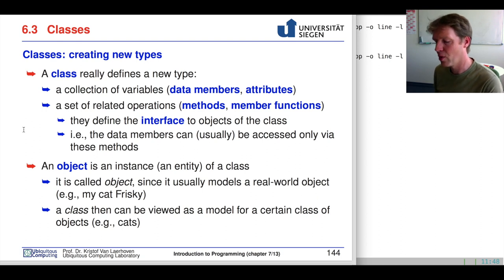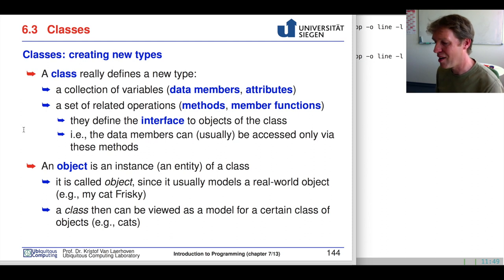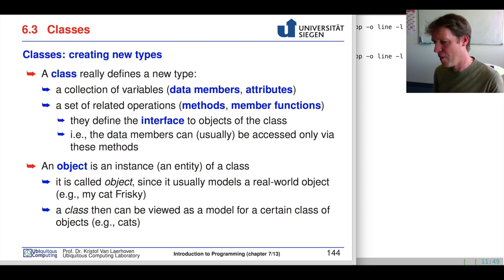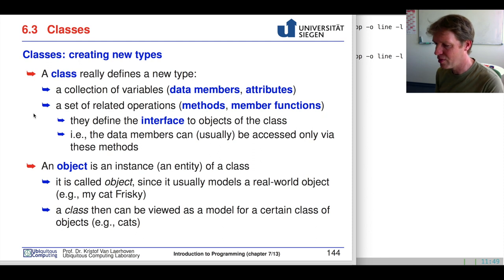Let's start with classes now. We've seen last time that there is such a thing called structs, but from now on we'll use a class for everything in C++. A class defines a collection of variables just as the struct does. We have a collection of variables that belong together — these we call attributes or data members — and on top of that we also have functions.